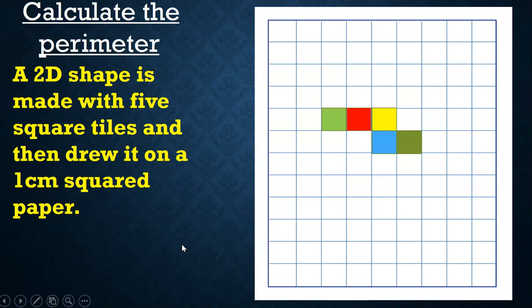Now, calculate the perimeter. A 2D shape is made with 5 square tiles and then drew it on 1 centimeter squared paper. So what is the perimeter? Pause the video and do the activity.